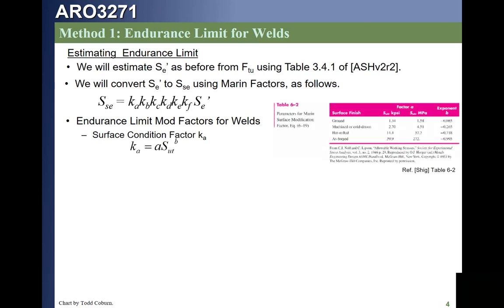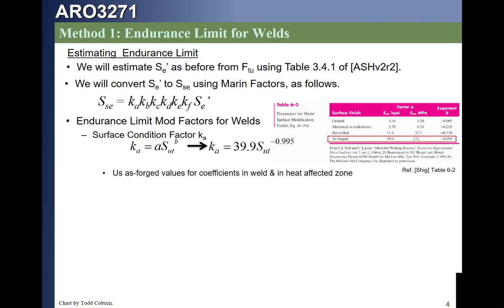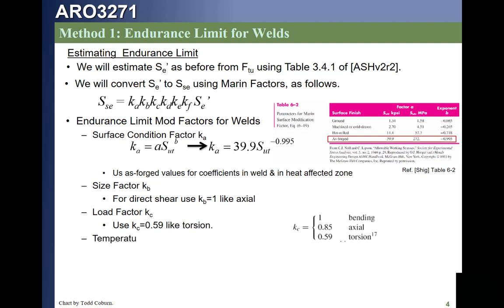The Marin factors will take the endurance limit from a pristine value to a non-pristine value and also convert it from a tension value to a shear value. For welds, we use the surface condition factor in the as-forged condition for all welds and in the heat-affected zone, using those two coefficients with no judgment needed. The size factor is 1. The load factor is 0.59, which converts the value from tension to shear. Temperature and reliability factors are applied the same way as before; all other factors are 1.